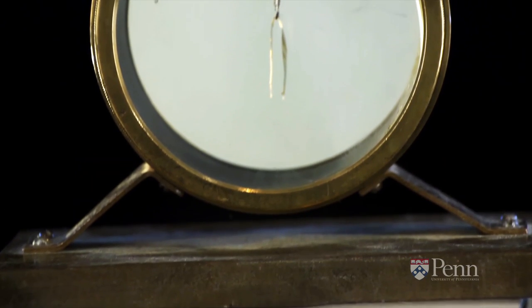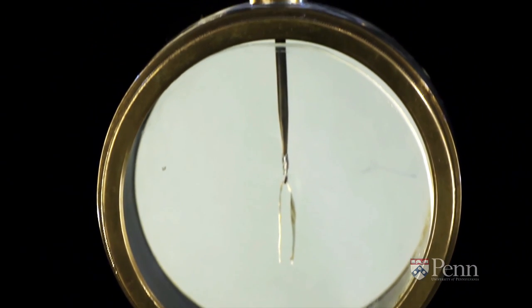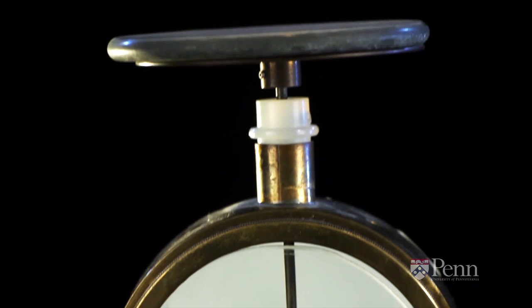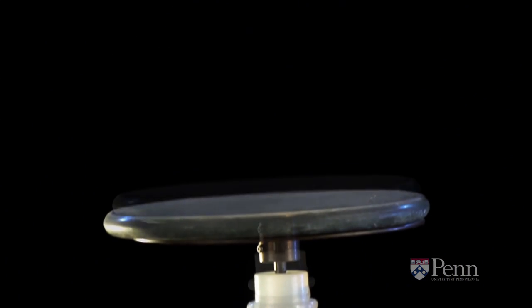The holder for that gold leaf runs up through an insulating plastic collar to the metal plate at the top of the electroscope. And on top of that metal plate, we've got a zinc plate.